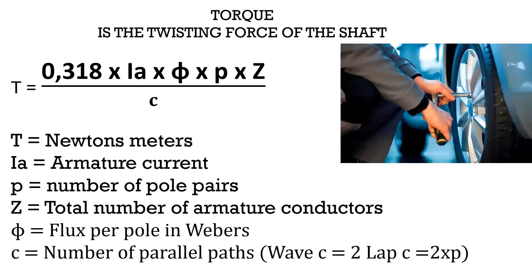Here we have torque. To define torque, it is the twisting force about an angular motion. To calculate torque, it is 0.318 multiplied by the armature current, multiplied by the flux per pole measured in Weber, the number of pole pairs, the total number of armature conductors, and then divide by the number of parallel paths.